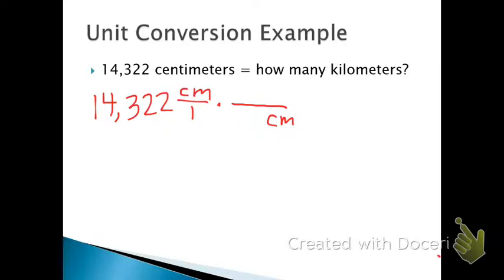Numerator and denominator variables cancel. And I know how many go in a meter. So for every one meter, there are 100 centimeters.